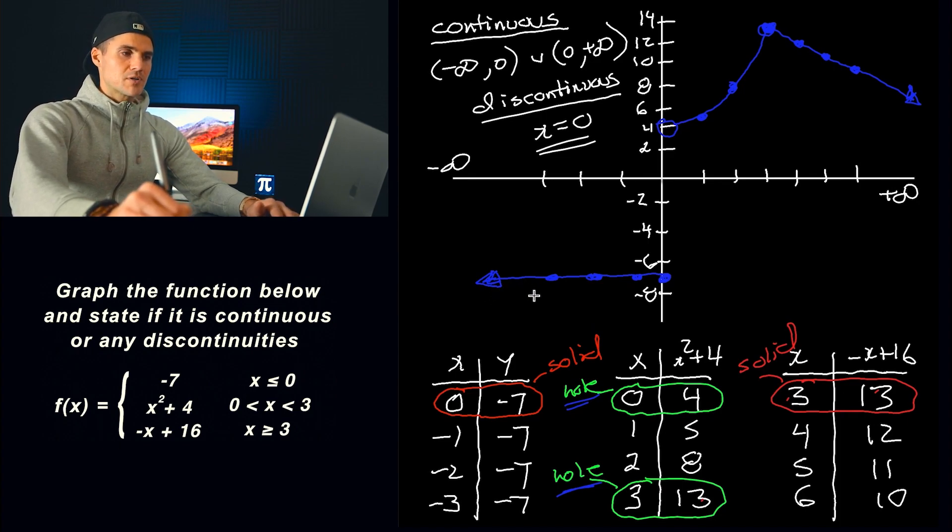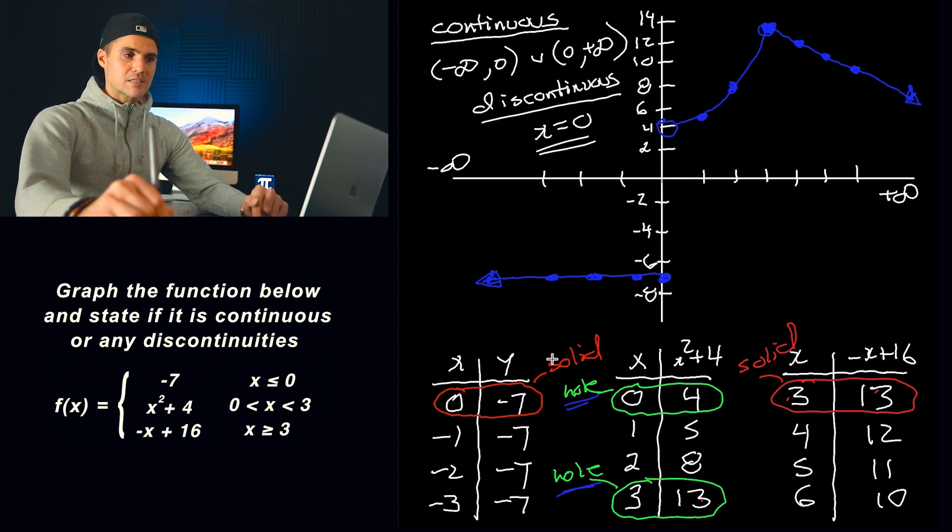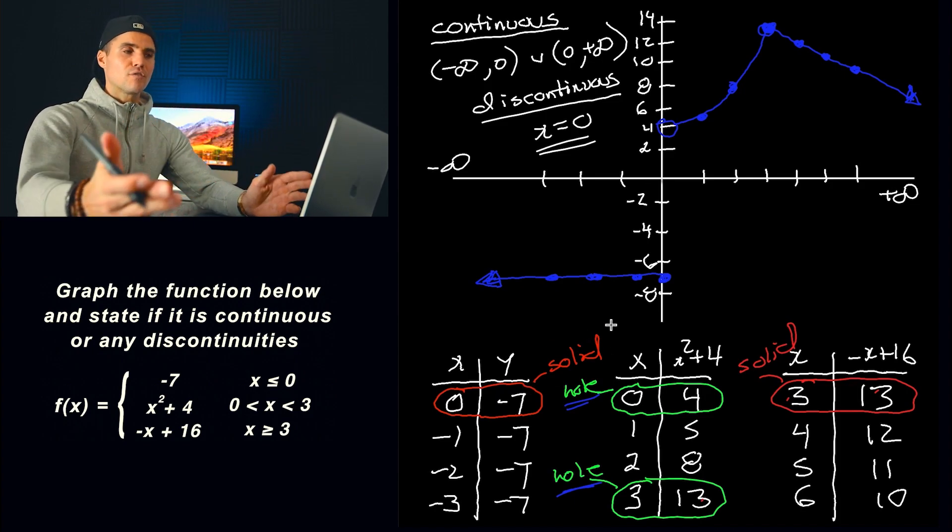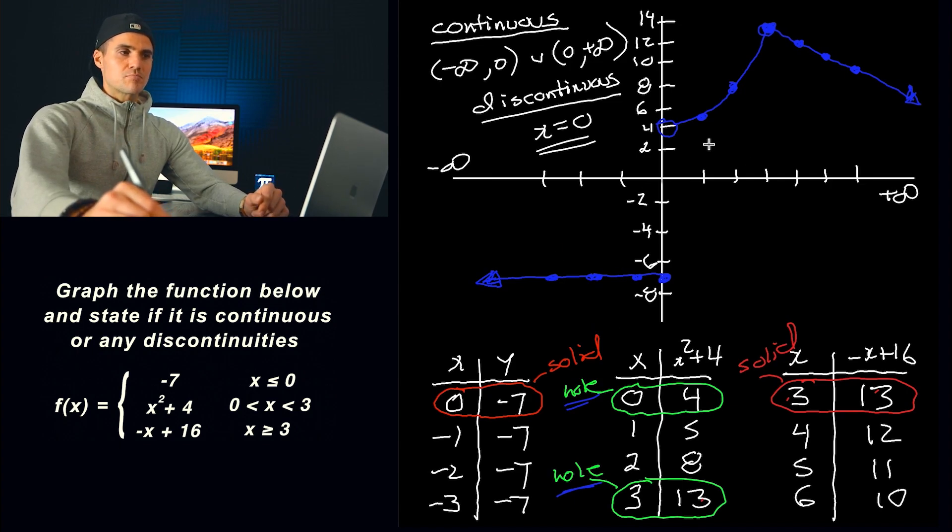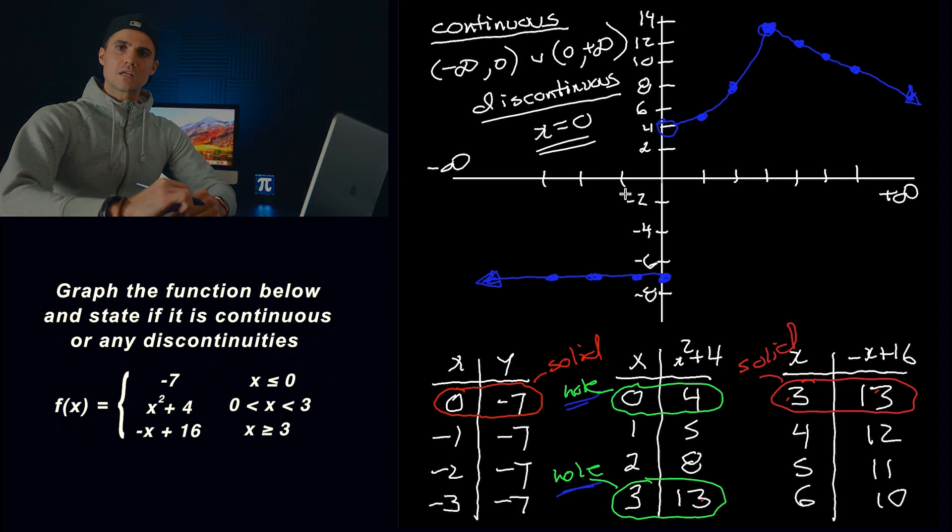So that's pretty much the process that I personally take whenever I'm dealing with piecewise functions. If we have to graph them, I like to make these tables. I like to label the solids and the holes, depending on the intervals that's given in the actual function. And then you can just plot the points, you can graph it, and then you could see where is it going to be continuous, where is it going to be discontinuous.